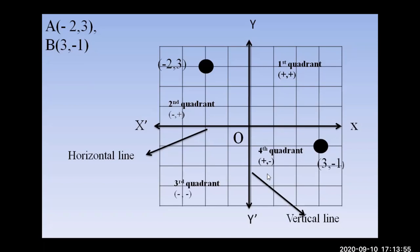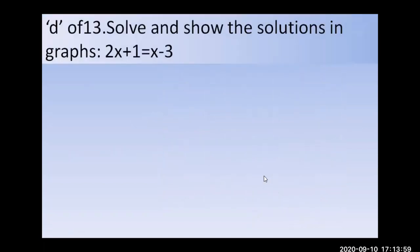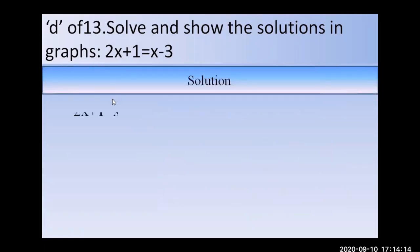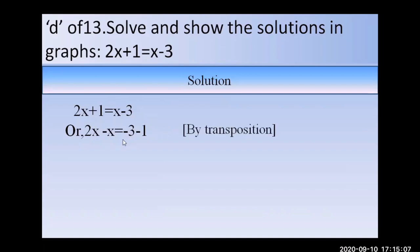Now for today's math, problem 13: given 2x plus 1 equals x minus 3, we must solve and show the solution on a graph. Algebraically: bring x to the left and constants to the right — 2x minus x equals minus 3 minus 1 — so x equals minus 4. The required solution is x equals minus 4.